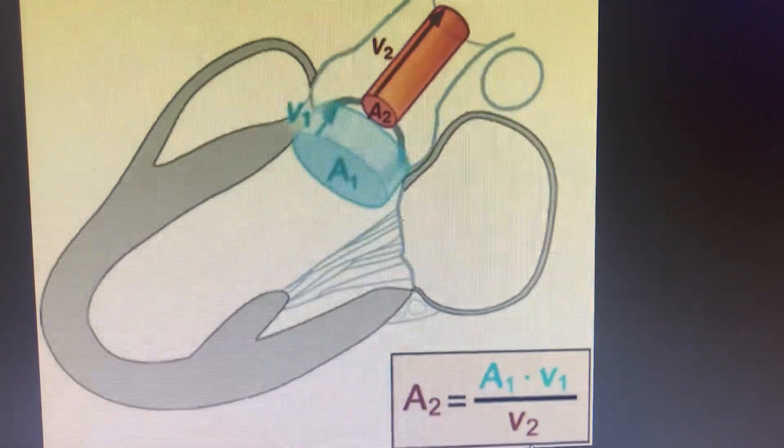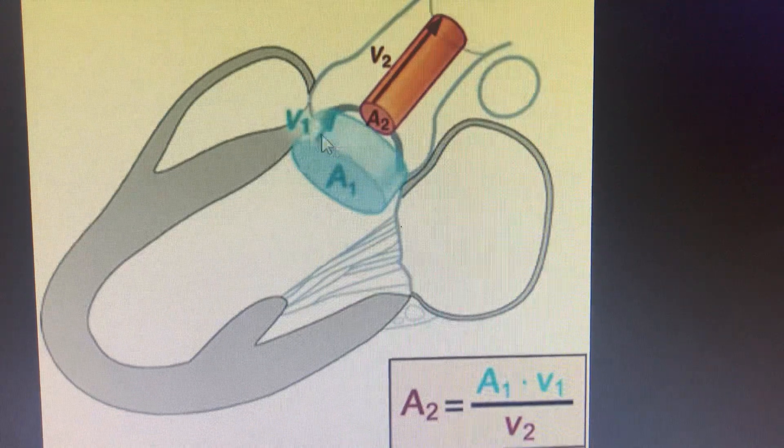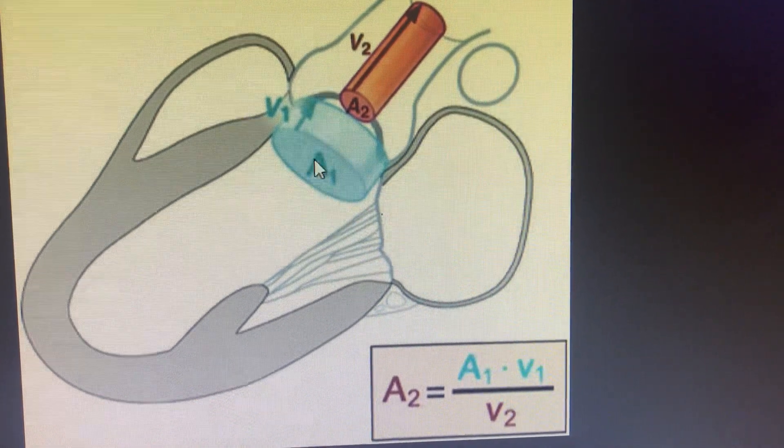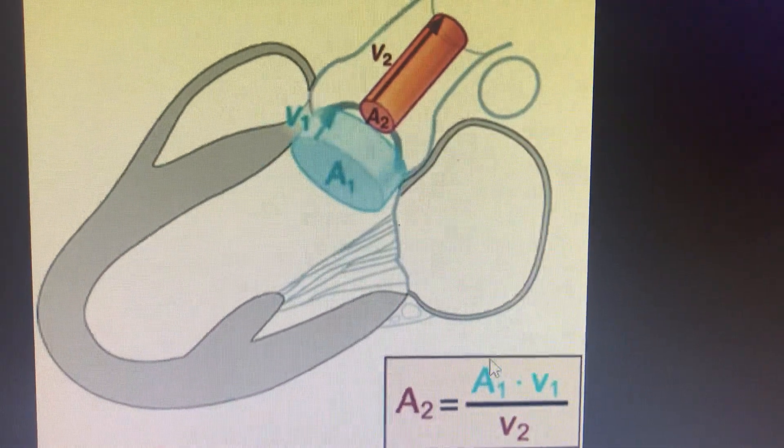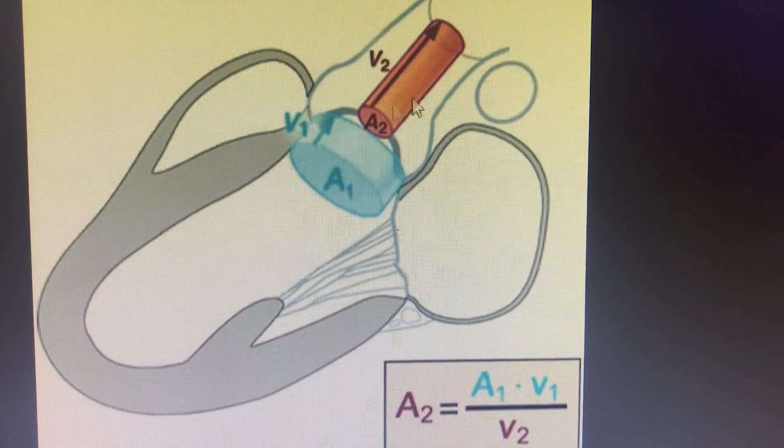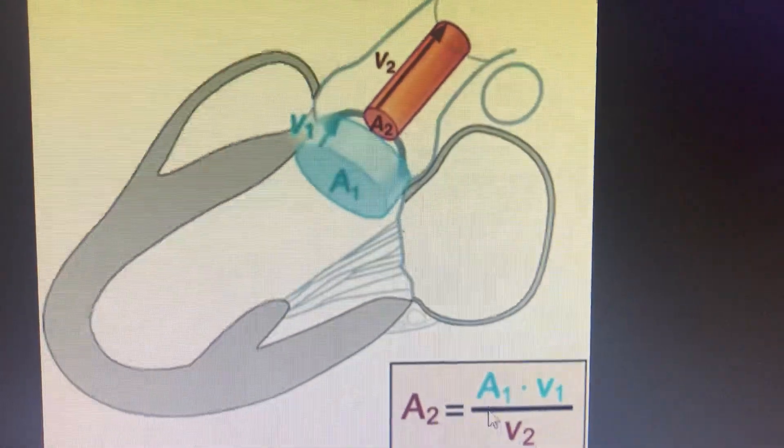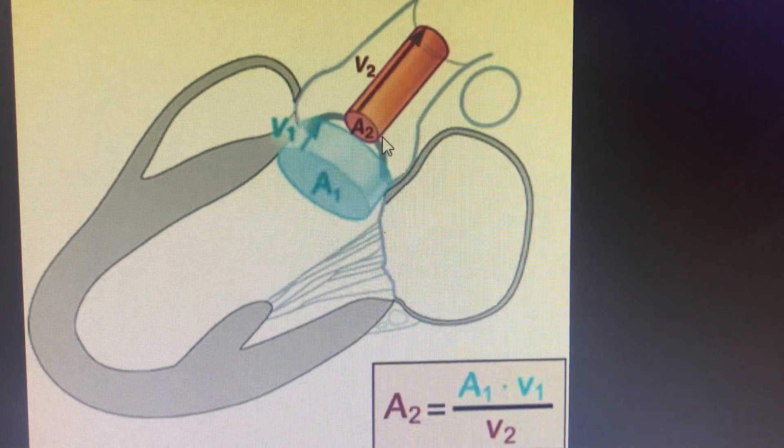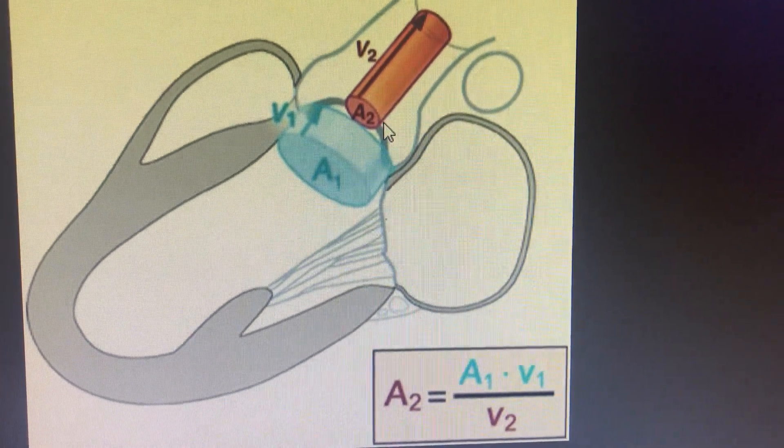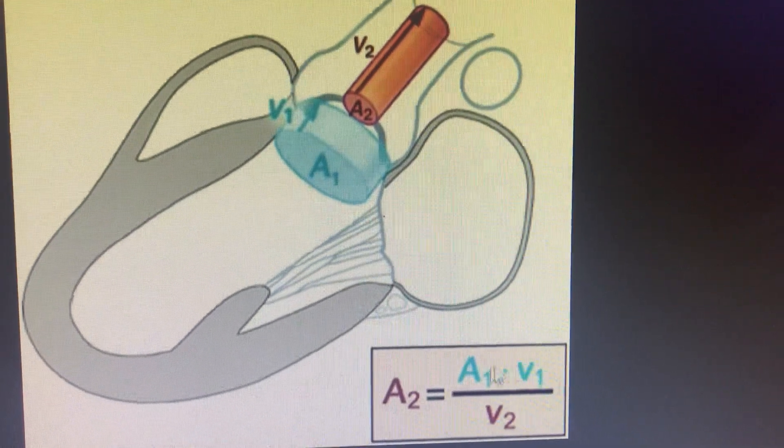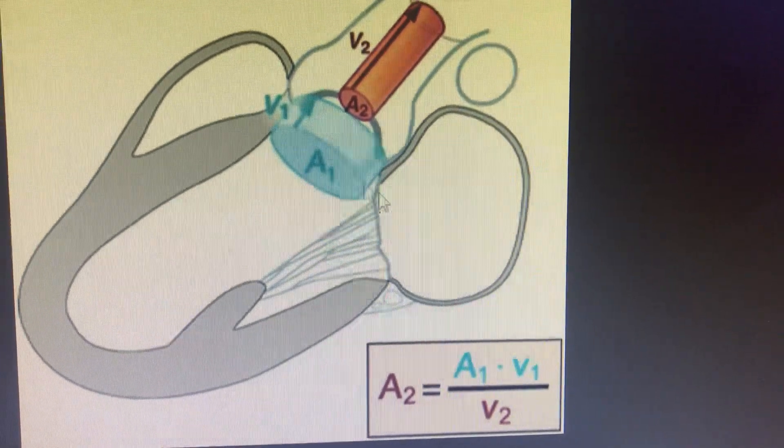Then you calculate V1 by V2, that is velocity before the convergence at the LVOT divided by velocity at the aortic valve stenosis. So aortic valve area or the aortic stenosis valve area is calculated as area at the LVOT multiplied by velocity at the LVOT.